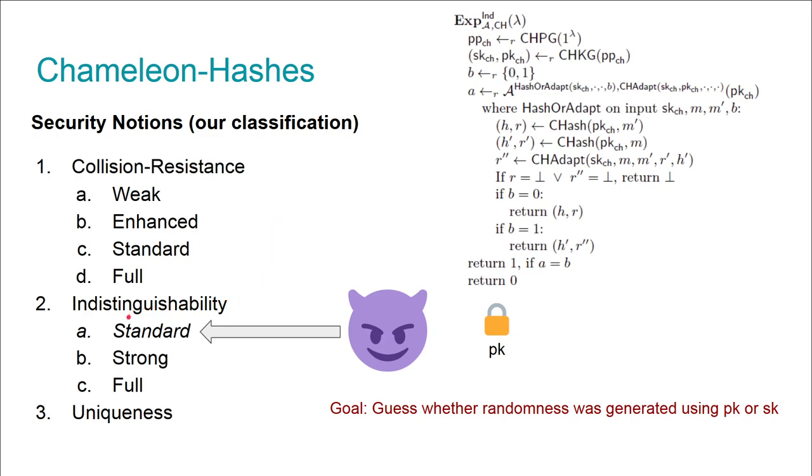In the standard definition, standard indistinguishability, the adversary is initialized with an honestly generated public key and gains access to a left-or-right style oracle and some collision-finding oracle. The hash-or-adapt oracle does exactly what one may think: it either hashes or adapts. The adversary has to decide which way was taken.